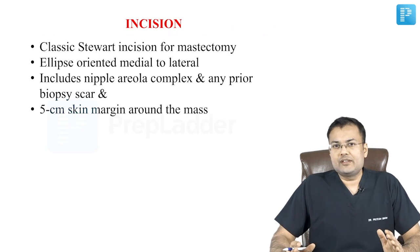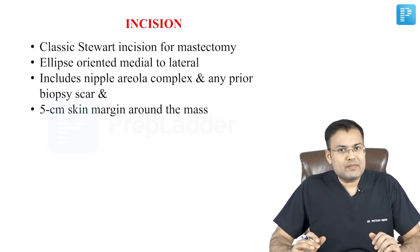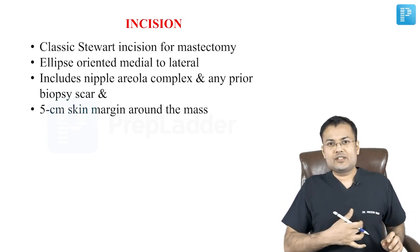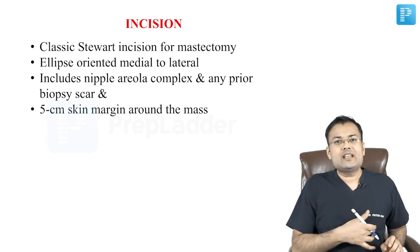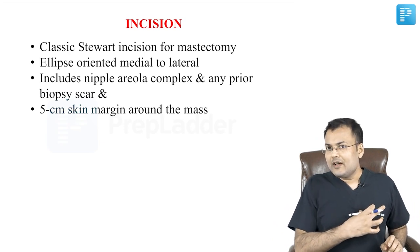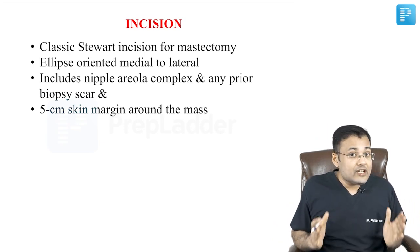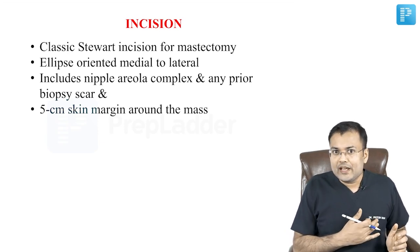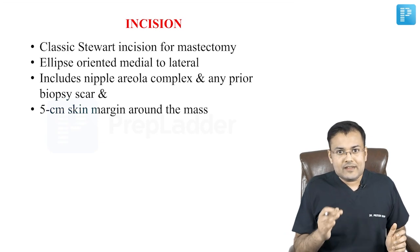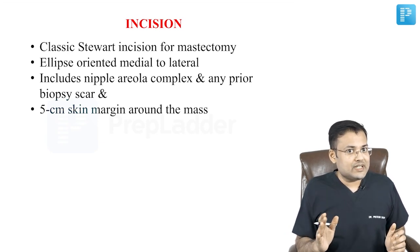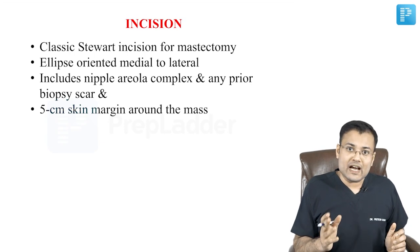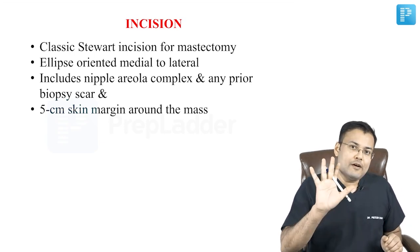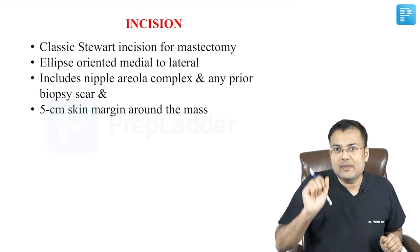Now coming to the incision. The name of the incision given for mastectomy is the classic Stewart incision. It is an elliptical incision oriented from medial to lateral direction. What is included in this incision? We have to include the nipple areola complex. If there is any previous biopsy scar, we have to include that scar also. Remember, around the lump usually a 5 cm skin margin is taken.